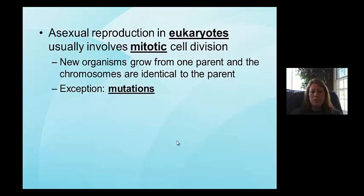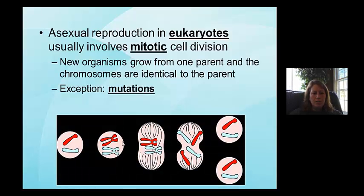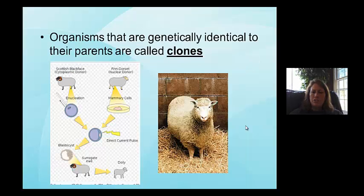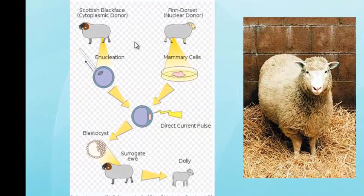Asexual reproduction in eukaryotes occurs through mitosis or mitotic cell division. A good example would be skin cells — we want the new skin cells to be identical to the original; we don't want variations, because variations would lead to mutations. After going through mitosis, you end up with two cells identical to the parent. Organisms that are genetically identical are called clones. You've probably heard of Dolly the sheep, which was the first successful clone.